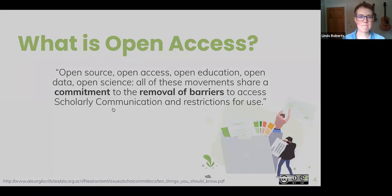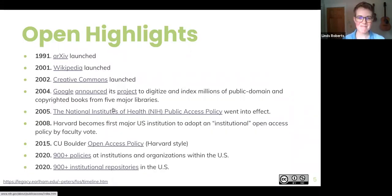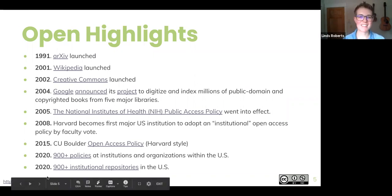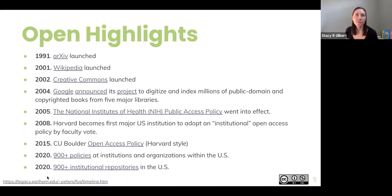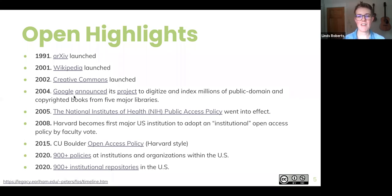I wanted to share some highlights of where the open access movement came from. It's somewhat arbitrary — we could trace it back to the 1970s. You may know about Project Gutenberg, which makes public domain works available; that started in the 70s and was influenced by text encoding initiatives of the 1980s. Open access really emerged out of the open source movements of the 70s and 80s that aimed to democratize the infrastructure of the internet. Steam really picked up in the 1990s, with early highlights including arXiv and the first open access journals.